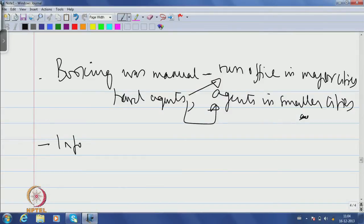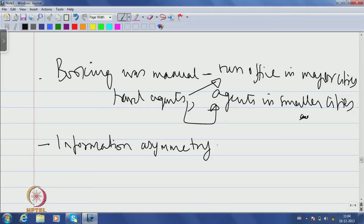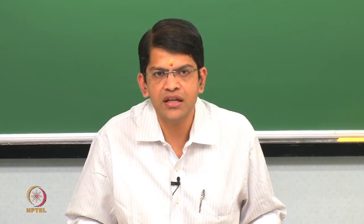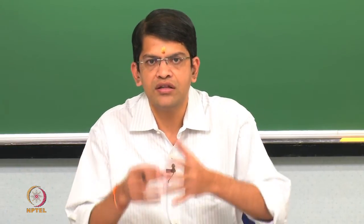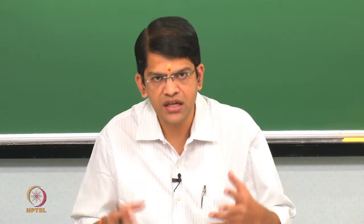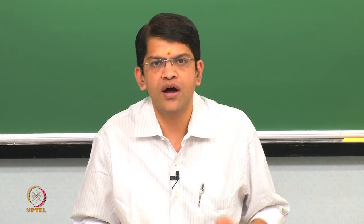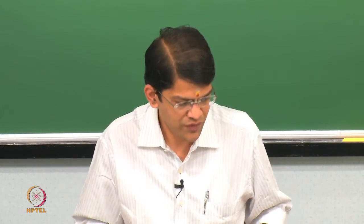Another thing that characterized bus travel at that point of time was information asymmetry — and I will spend more time on this because it is the key to the case discussion. Because of this manual booking, there was no symmetry in the information available from the bus operators' point of view and from the travellers' point of view. By information, I mean the vacancy position, the routes, the price, the seating arrangement, and all such critical information that is very important both from the operators' and travellers' perspective.